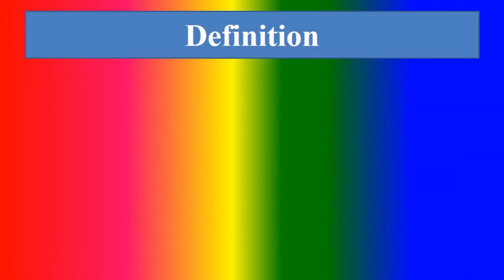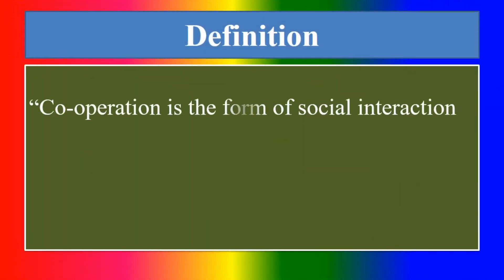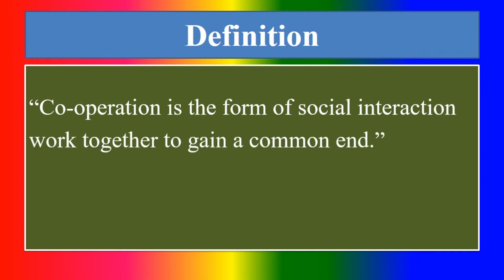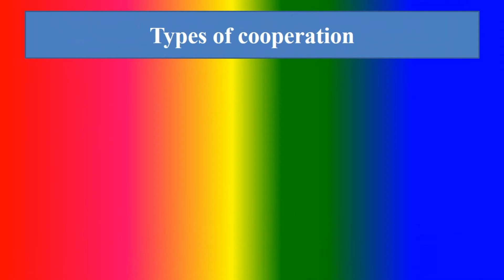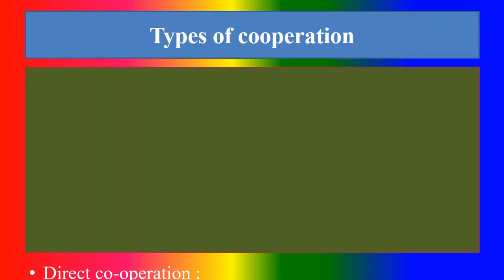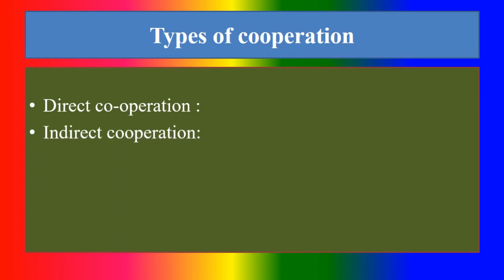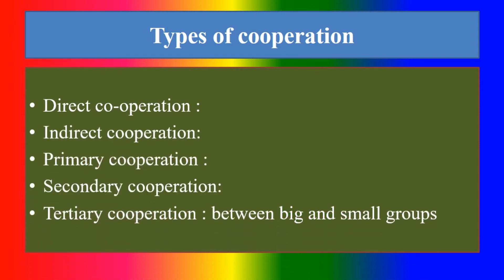Can you define cooperation? Cooperation is the form of social interaction to work together to gain a common end. What are the types of cooperation? Direct cooperation, indirect cooperation, primary cooperation, secondary cooperation, and cooperation between big and small groups.